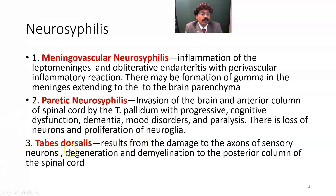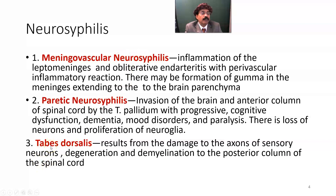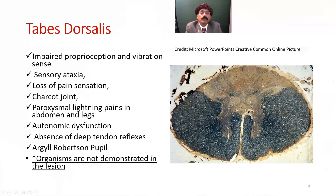In tabes dorsalis, there is damage to the axons of the sensory neurons — not motor neurons. There is degeneration with demyelination, meaning destruction of the myelin around the axons, affecting the posterior column of the spinal cord. The spinal cord posterior column is particularly affected in tabes dorsalis. This is a cross-section of the spinal cord, especially in the lumbar and lower thoracic lumbar area, where tabes dorsalis occurs.